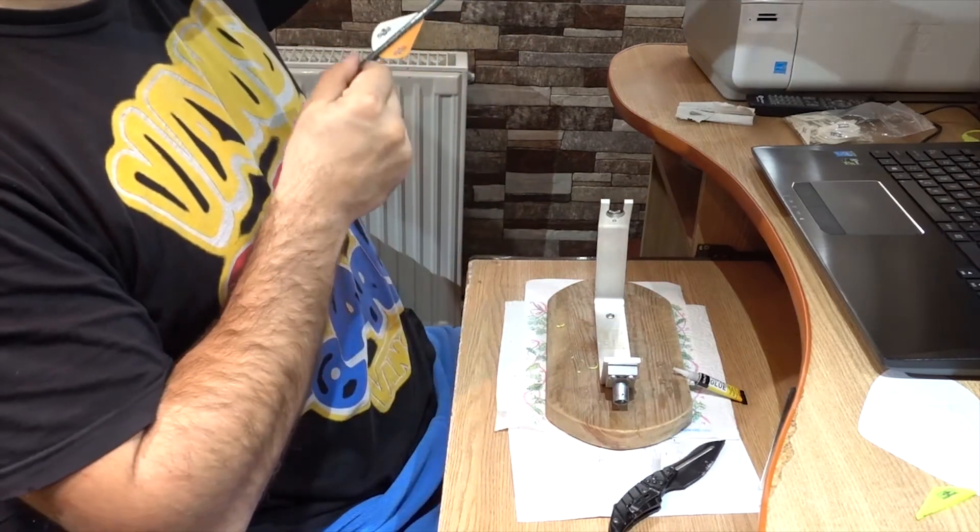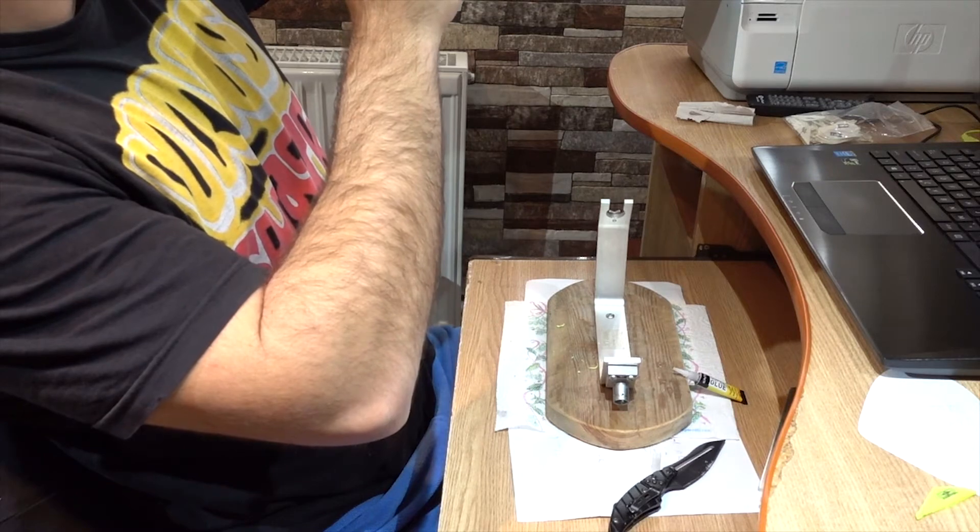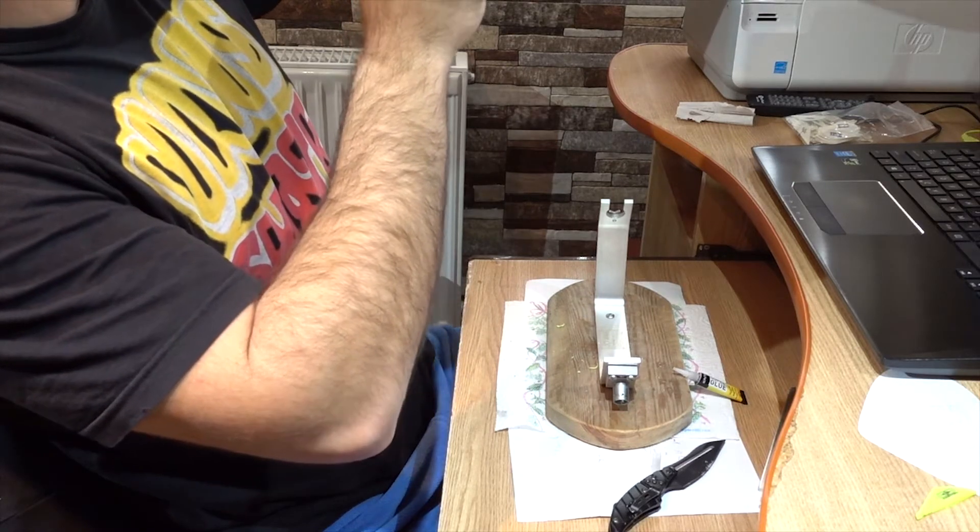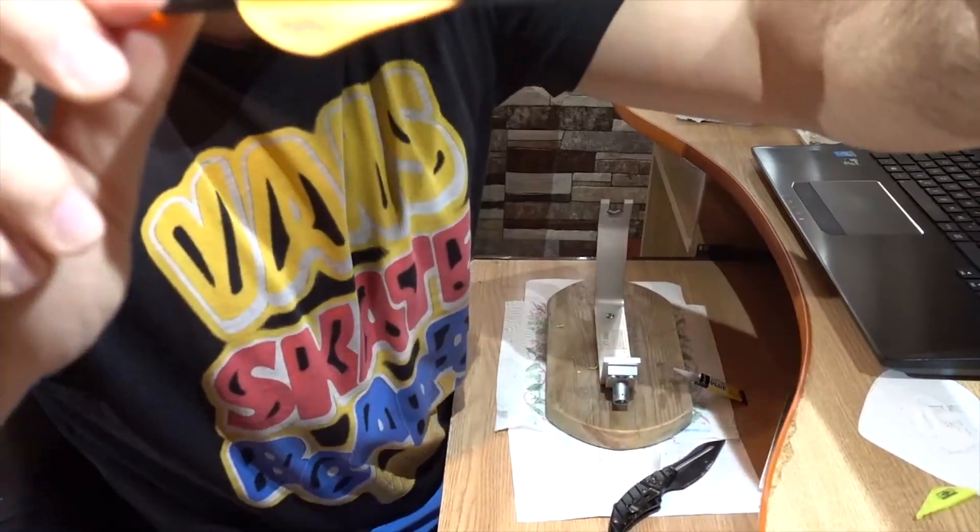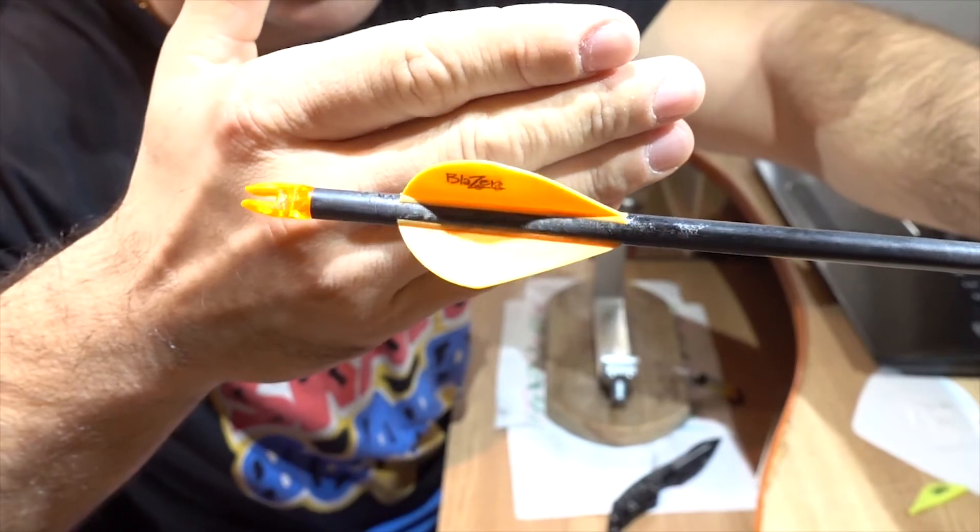So there you go folks. This wasn't rocket science. It's actually quite easy for everyone to do it. I always like to use a protective sheet for my arrow shaft, but sometimes you don't really have to do it. It's actually up to you.